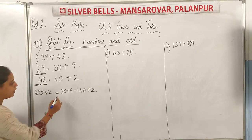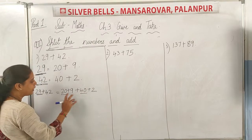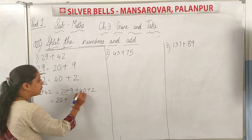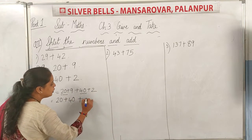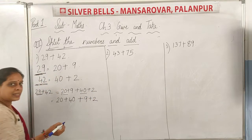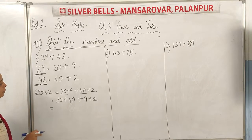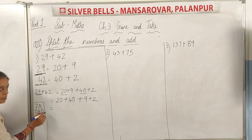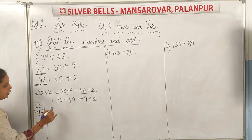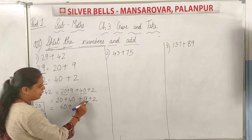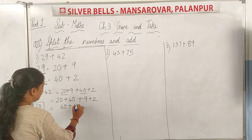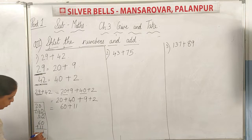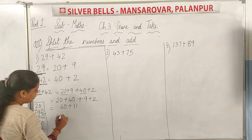Clear up to this step. Next, we group the two-digit numbers together — 20 and 40 — and the one-digit numbers together — 9 and 2. So we write 20 plus 40, and then 9 plus 2. Now adding: 0 plus 0 is 0, and 2 plus 4 is 6, so 20 plus 40 is 60. And 9 plus 2 is 11. Now 60 plus 11: 0 plus 1 is 1, and 6 plus 1 is 7. So the answer is 71.